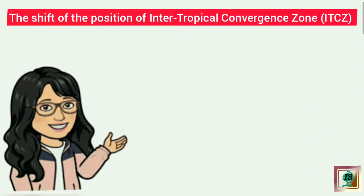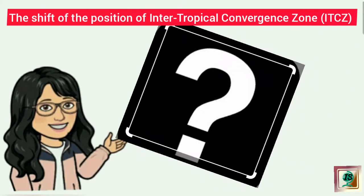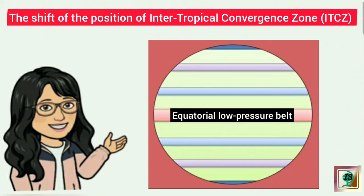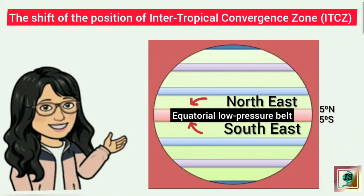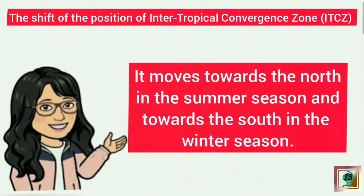Now, the second factor is the shift of the position of the inter-tropical convergence zone. The inter-tropical convergence zone is the equatorial low pressure belt that lies between 5 degree north and 5 degree south. This is also known as the low pressure belt where the northeast and southeast trade winds meet or converge. This convergence zone lies more or less parallel to the equator, but moves north or south with the apparent movement of the sun — towards the north in summer and towards the south in winter.